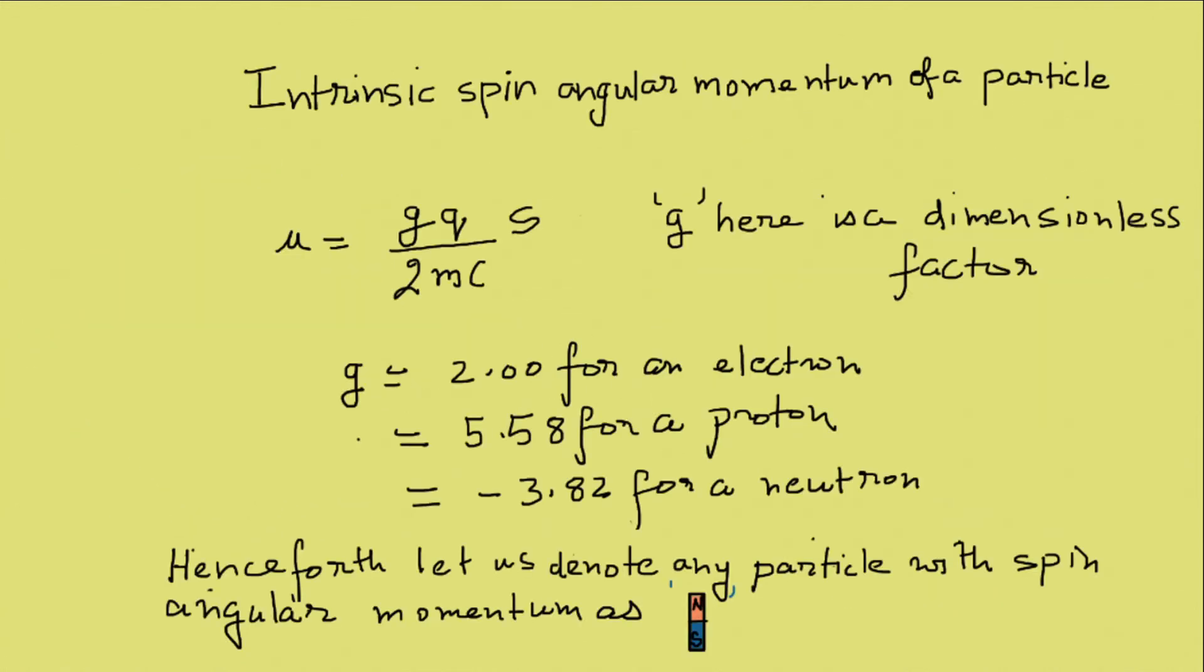When we talk about the intrinsic spin angular momentum of a particle, the relationship becomes mu equal to gq by 2mc into s. s is used instead of l in this case. g here is a dimensionless factor and it's 2.00 for an electron, 5.58 for a proton and minus 3.82 for a neutron.